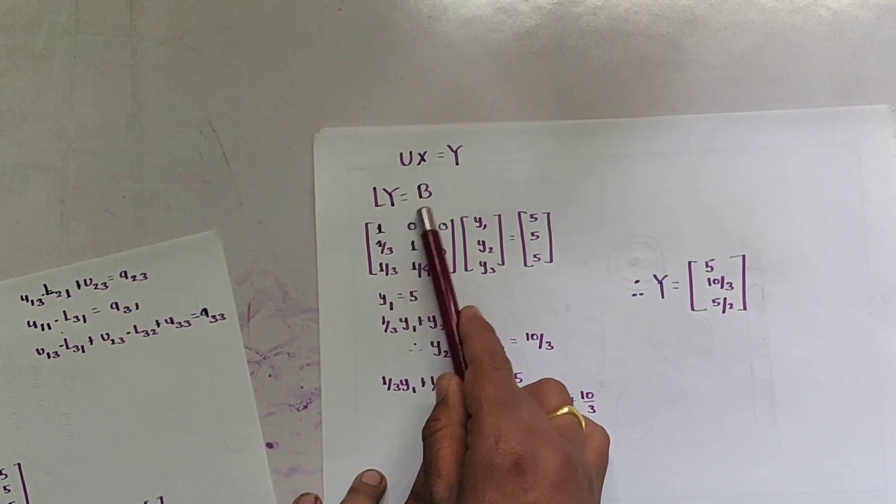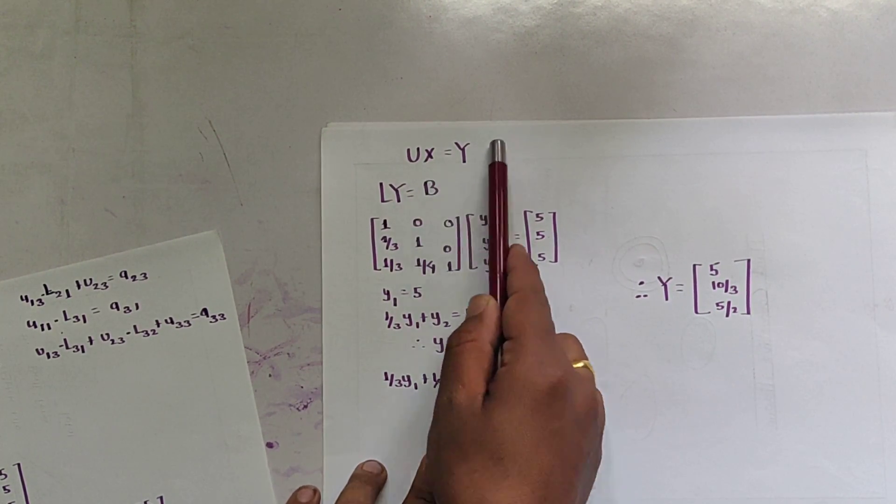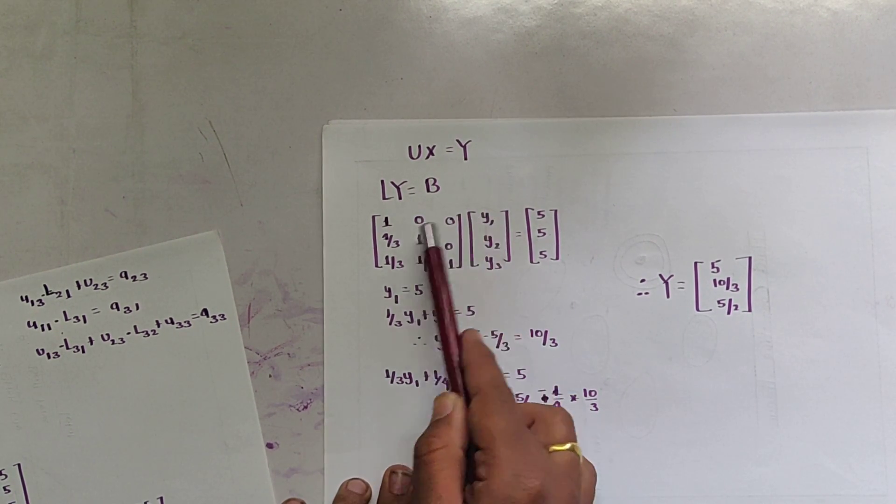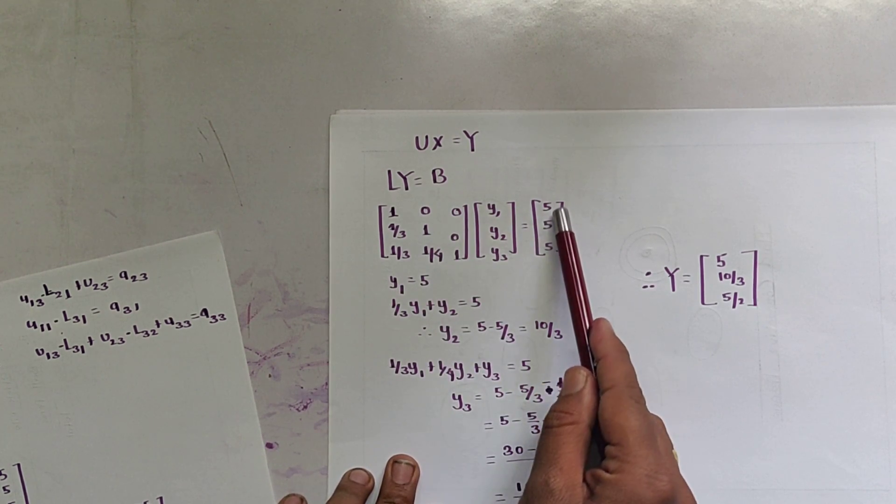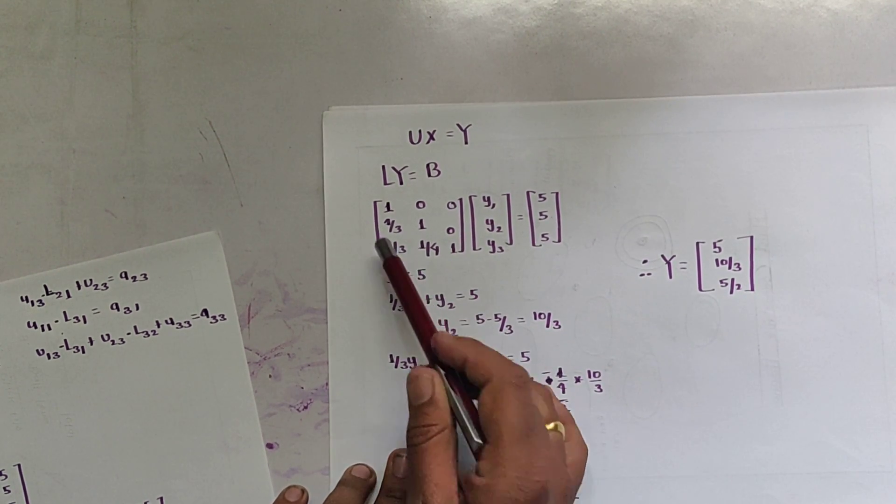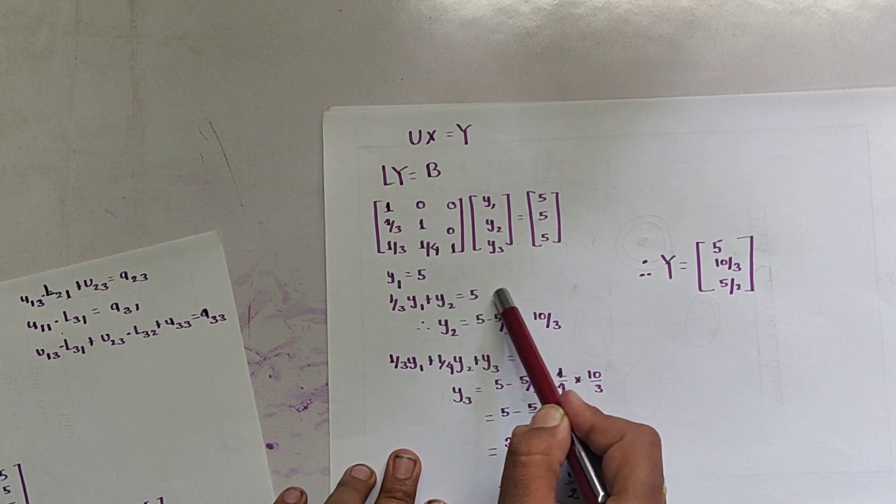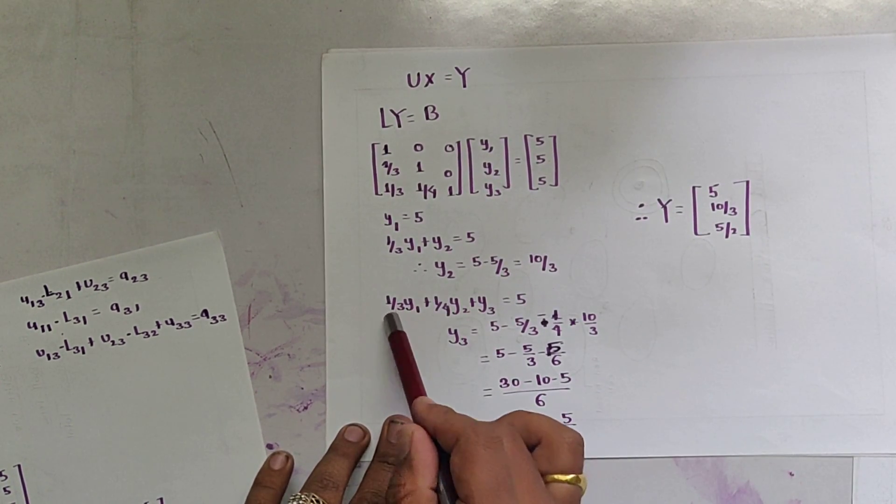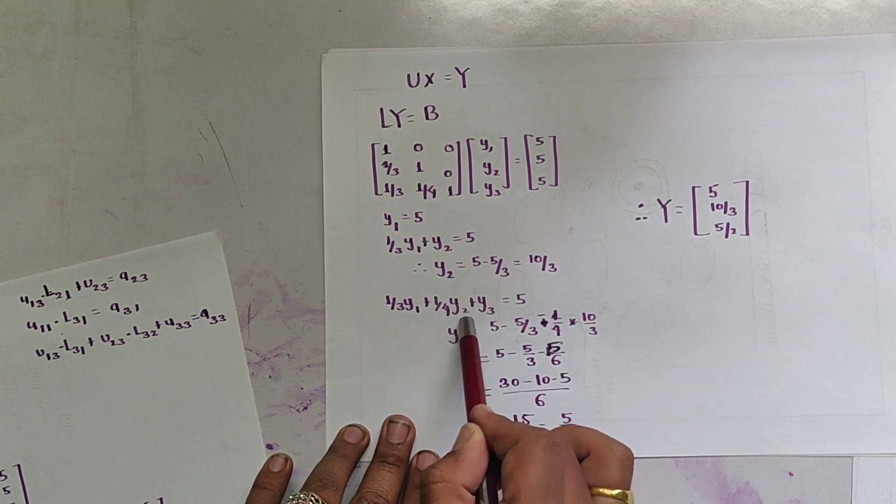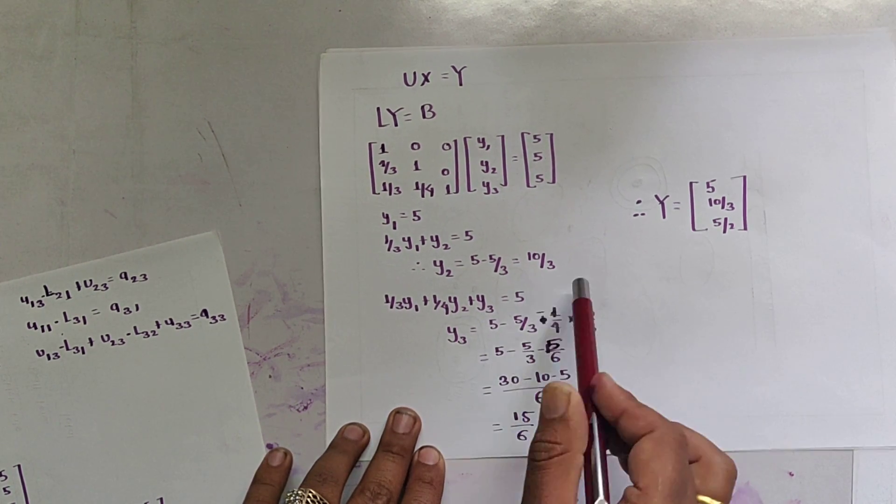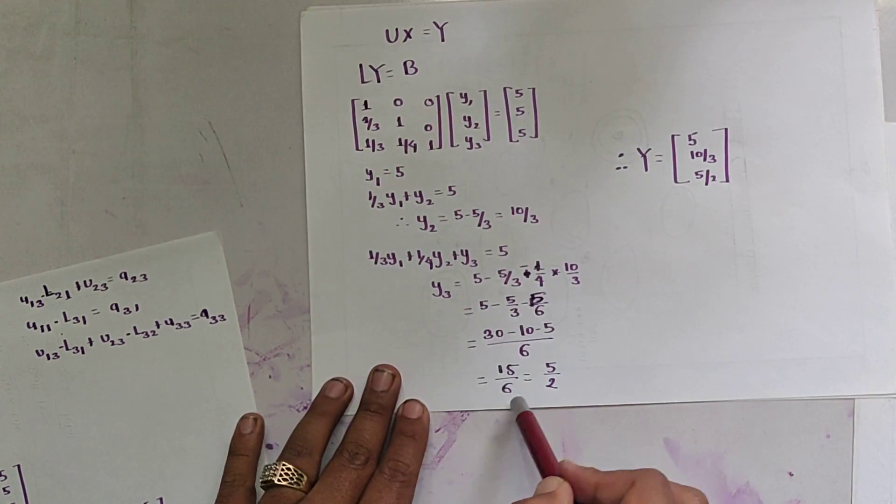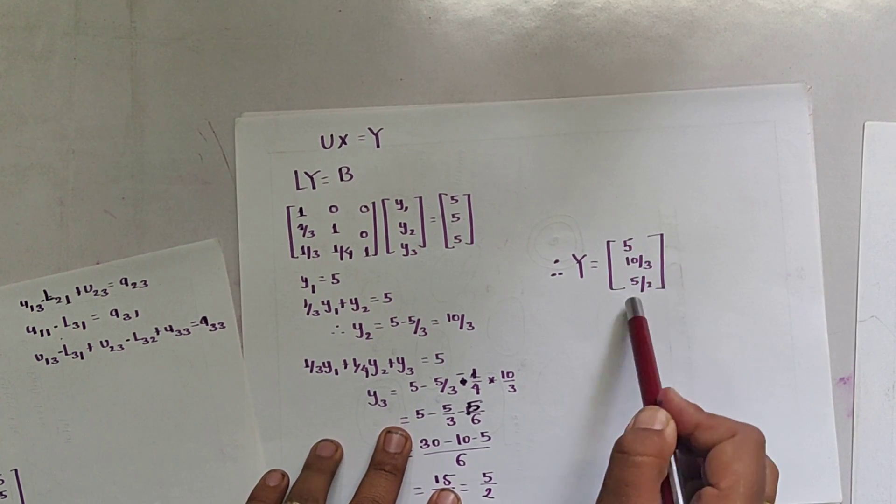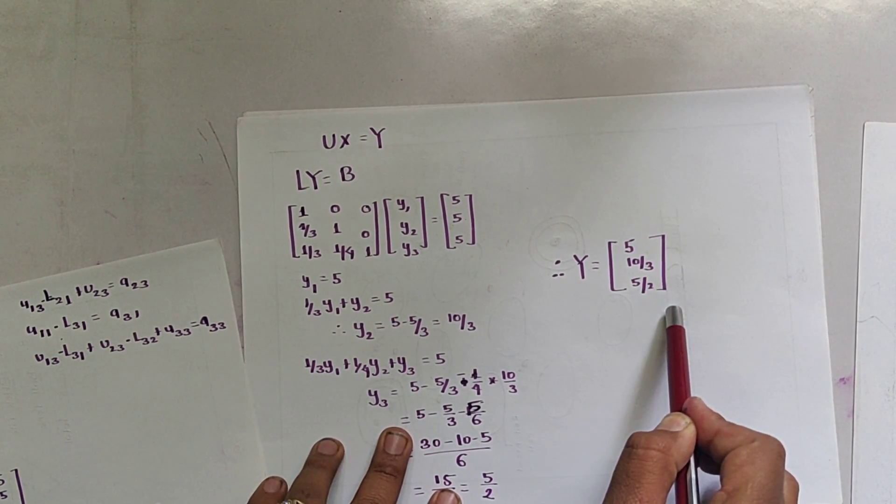Now LY = B, because we have supposed UX = Y. Multiplying these two, we get Y1 = 5. (1/3)Y1 + Y2 = 5, that means Y2 = 10/3. Similarly, (1/3)Y1 + (1/4)Y2 + Y3 = 5, by solving it we get Y3 = 5/2. That means Y matrix is 5, 10/3, and 5/2.